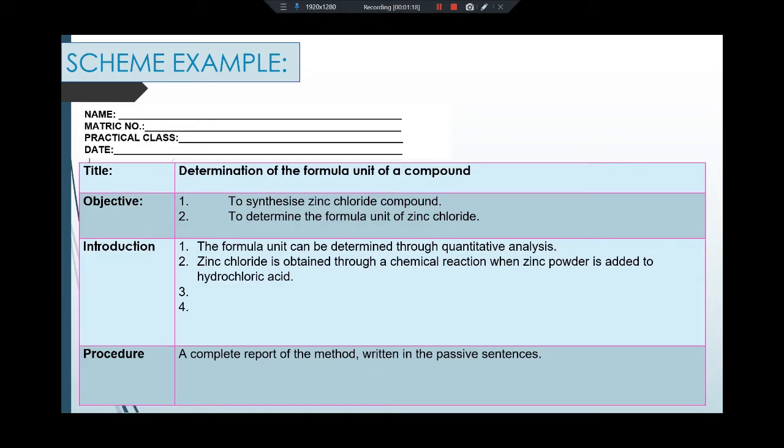First write down the title for this experiment, which is determination of the formula unit of a compound, and then you write down the objective. You can find the objective straight from the lab manual. There are two objectives, so start your objective sentence with 'to'. For this experiment: to synthesize zinc chloride compound and to determine the formula unit of zinc chloride.